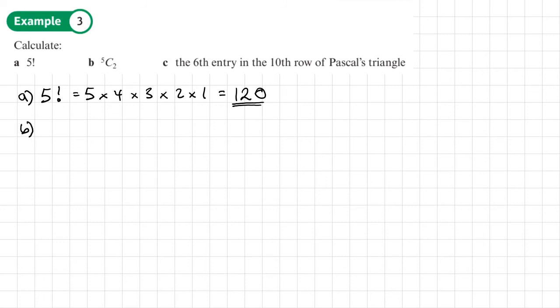So part b, 5c2, or 5 choose 2, which we can also write as 5, 2, like this. Again, we can use our calculator to work it out, but if we're going to work out manually, it would be n factorial, which is 5 factorial, over r factorial, times by n minus r factorial, so 5 minus 2, which is 3, times by 3 factorial.